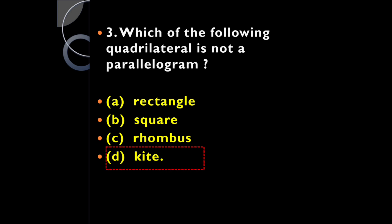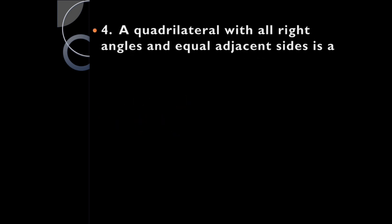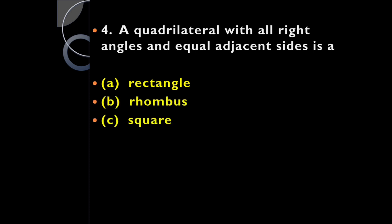It's a kite, because rectangle, square, and rhombus are special parallelograms, but a kite is not a parallelogram. A quadrilateral with all right angles and equal adjacent sides is: a rectangle, rhombus, square, or trapezium?